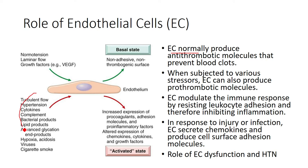Many different things can cause this activated state: turbulent flow, hypertension, bacterial infections — which can lead to endothelial dysfunction — and we're finding that risk of acute cardiovascular events goes up significantly with acute infections. Advanced glycation end products seen in diabetics, different viruses, and exposure to tobacco smoke can all affect endothelial function. When the endothelium becomes activated, it increases expression of procoagulant factors and adhesion molecules.